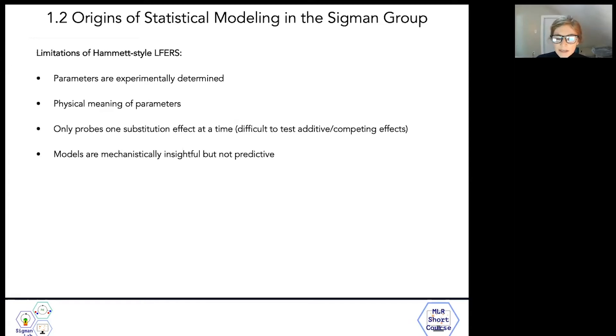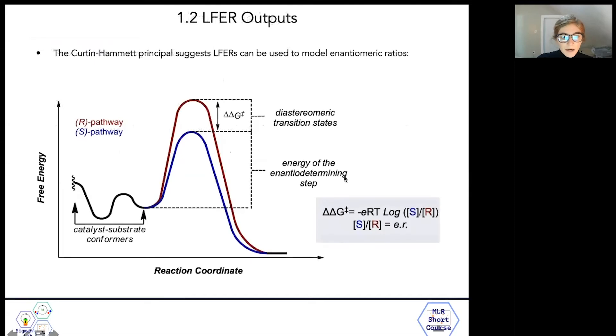Given the group's focus on asymmetric catalysis, linear free energy relationships were often used by the group to relate substituent effects to the difference in energy of diastereomeric transition states, or rather observed enantioselectivities. The key assumption in these types of linear free energy relationships is that the difference in energy of diastereomeric transition states, delta delta G double dagger, is related to the enantiomeric ratio through this equation.